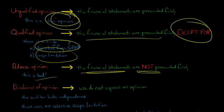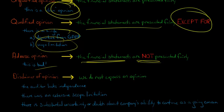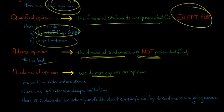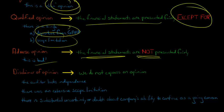A disclaimer of opinion — in a sense, we said there's four different types of opinions, but really it's the auditor not expressing an opinion. They're saying we cannot express an opinion. And there are several reasons the auditor might say we have to issue a disclaimer of opinion.